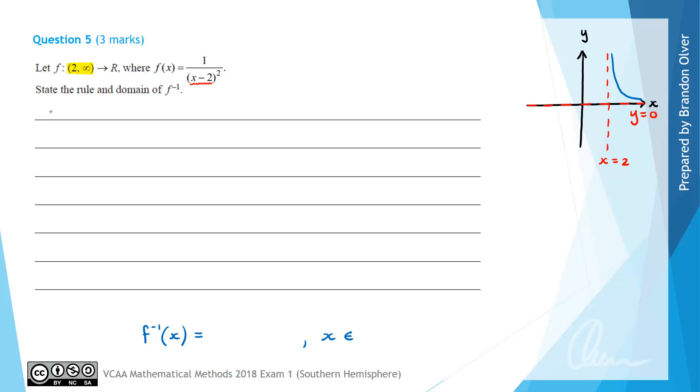To find the inverse we're going to start by letting y equal the function f(x). Therefore we have y is equal to 1 divided by (x - 2) all squared. Then we're going to swap x and y to find the inverse. So therefore we find that x is equal to 1 divided by (y - 2) squared.